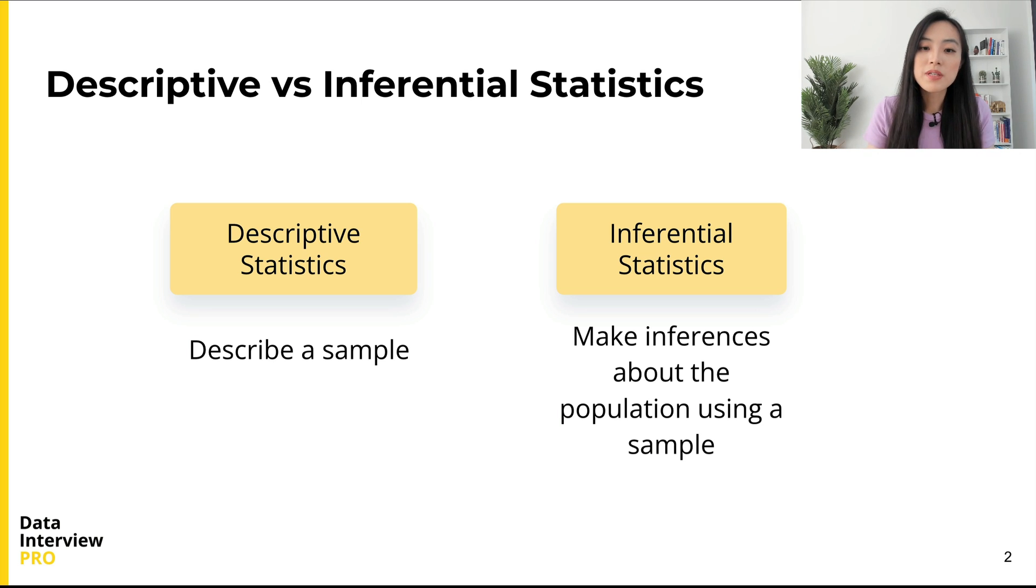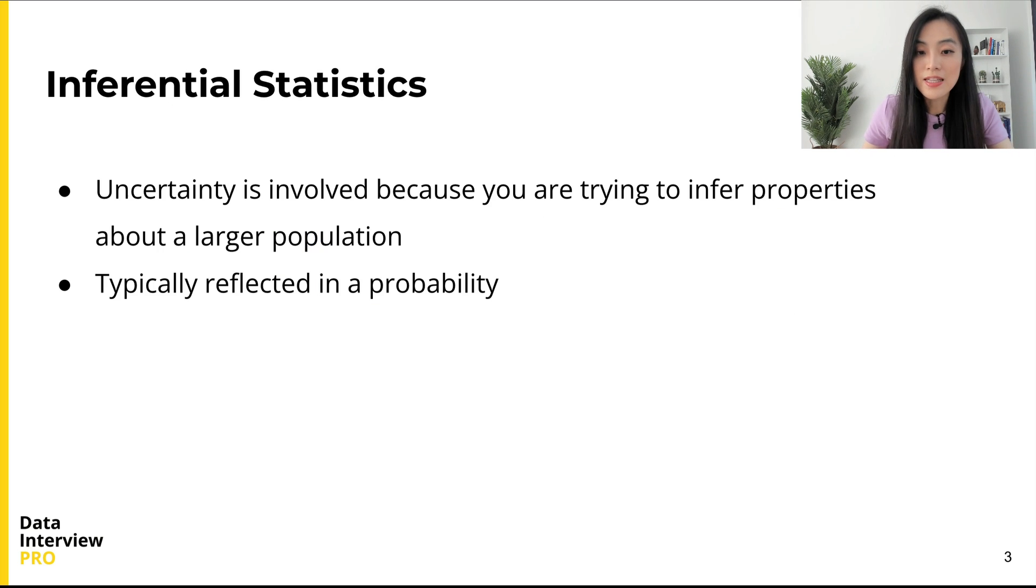Different from descriptive statistics, inferential statistics use data from a sample to make inferences about the population from which the sample was drawn. Another way to think about this is that the goal of inferential statistics is to draw conclusions based on a sample and generalize the conclusions to a population. Unlike descriptive statistics, there is uncertainty involved in inferential statistics because you are not simply describing a sample, but also trying to infer properties about a larger population.